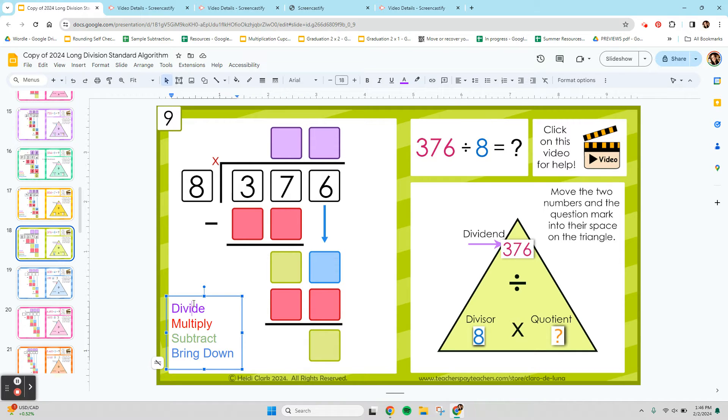First, we divide. And normally you do 3 divided by 8. But 3 is not big enough. If I had 3 pennies and I had to divide them into 8 buckets, I don't have enough to actually do it. So you're actually going to take the 37 and do that number instead. 37 divided by 8. One way to think of this is you could skip count your 8s and see how close can you get to 37 without going over.